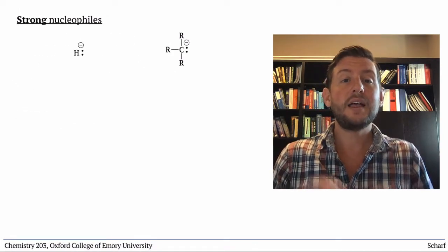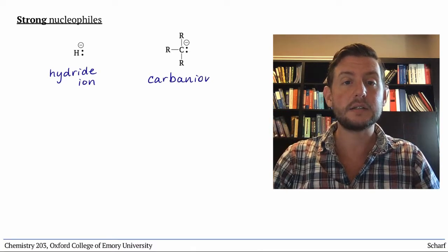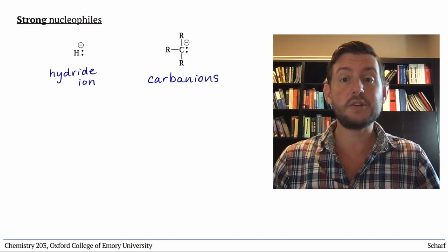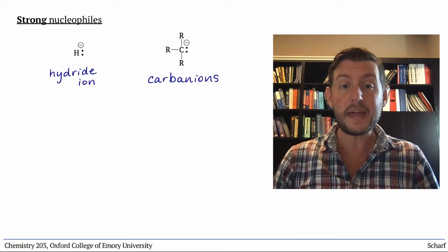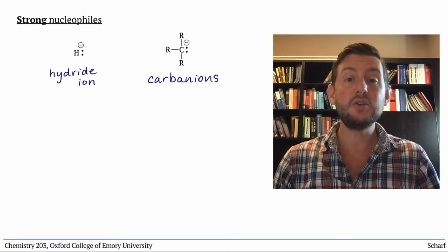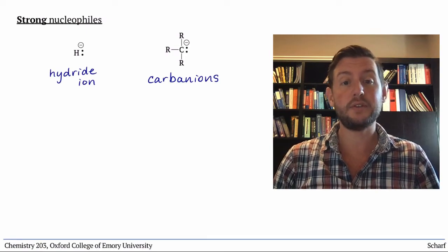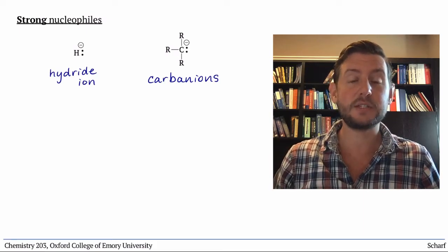We call these compounds the hydride ion and carbanions. The trouble with the species that I've drawn, H- and C-, is that they're quite challenging to make. And when they are made, they usually behave as Brønsted bases rather than nucleophiles. That is, they don't really do the reaction that we described a second ago.